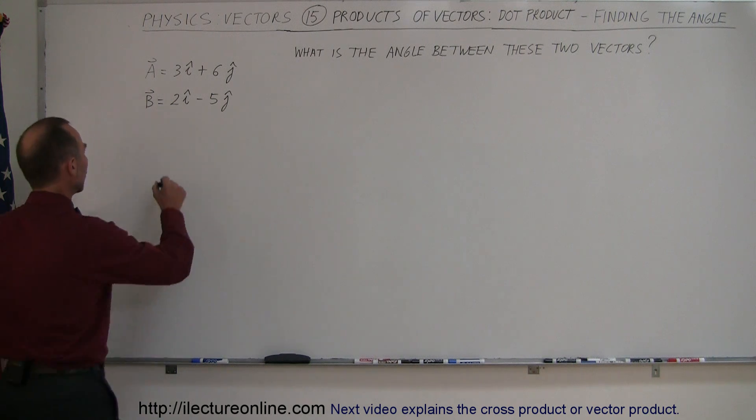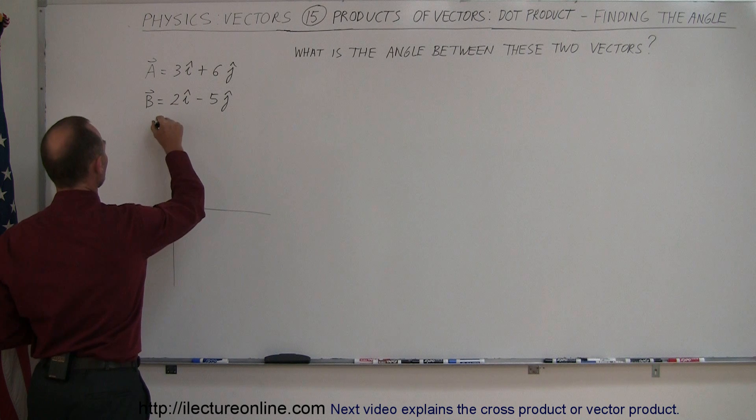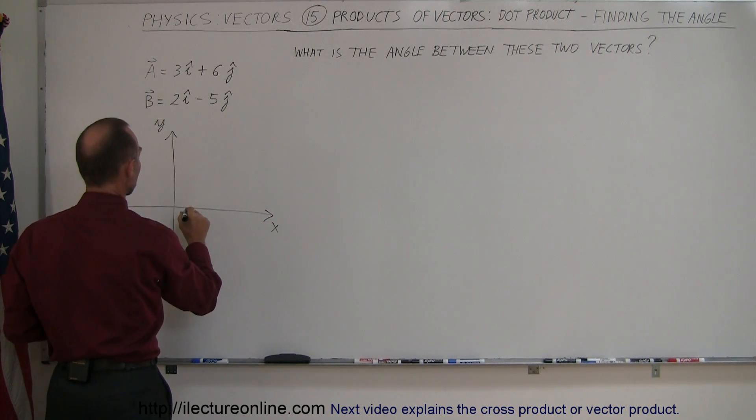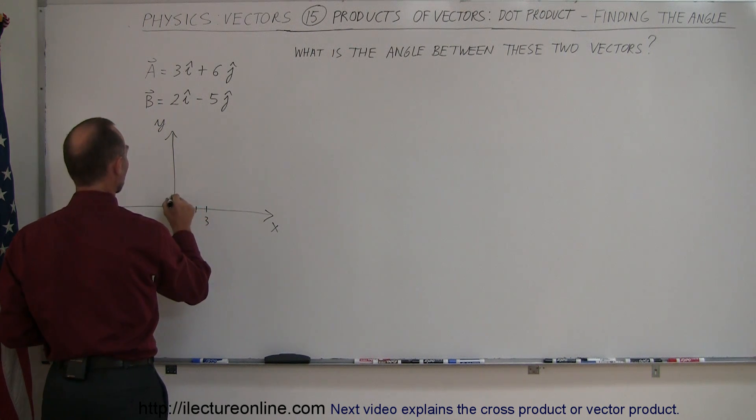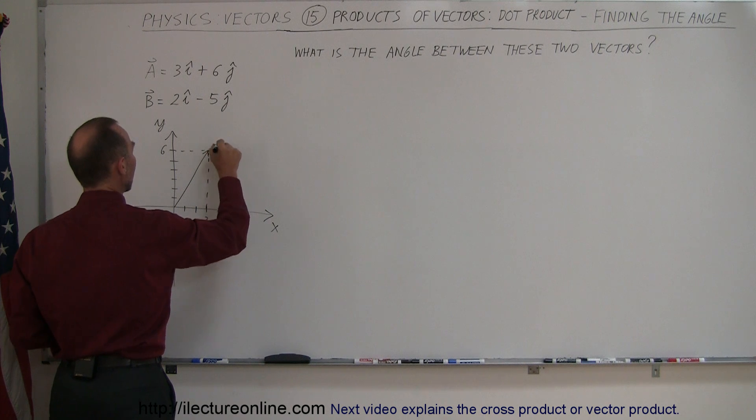Let's draw that on the board for a moment. So let's put our xy-axis down. Here's our y-axis, here's our x-axis. For vector A, 3 in the x-direction, 1, 2, 3, and 6 in the y-direction, 1, 2, 3, 4, 5, 6. And so where these two points meet, that would be vector A right there. So there's vector A.